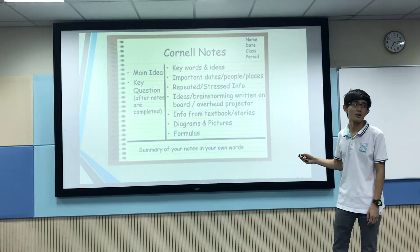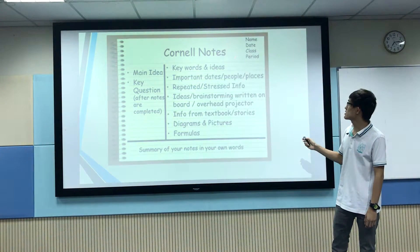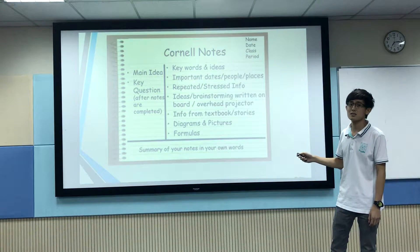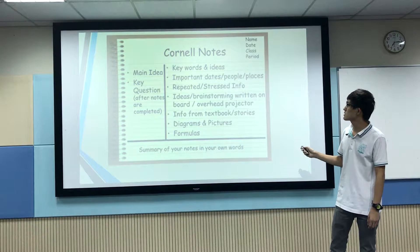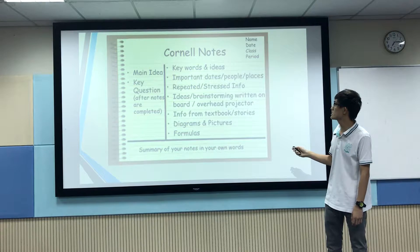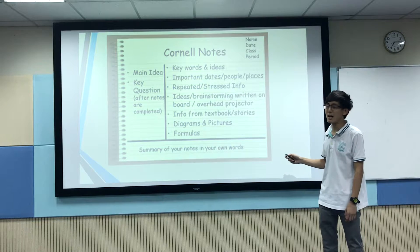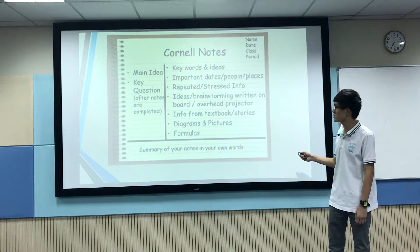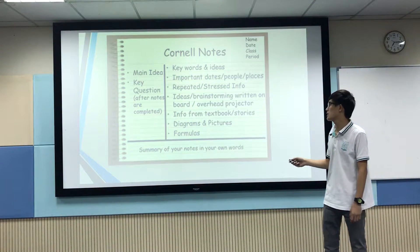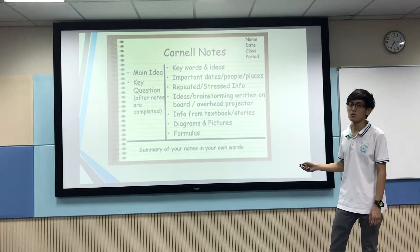Characteristics of Cornell Notes. This is an example of Cornell Notes. It consists of named class periods and combined ideas. The contents of the Cornell Notes include keywords and ideas, important dates, repeated info, ideas projected on the projectors, info from textbook, diagrams and pictures, and some formulas. It is also a summary of your notes in your own words.